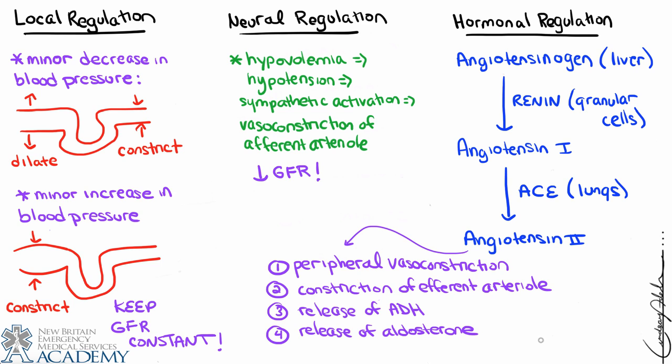These four effects are critical for maintaining blood pressure and blood volume. When the opposite situation arises — excess blood volume or high blood pressure — atrial natriuretic peptide (ANP) can be released from the contracting cells of the atria. ANP opposes the renin-angiotensin system by inhibiting renin secretion, ADH secretion, and aldosterone secretion, thereby decreasing blood pressure and blood volume as needed.